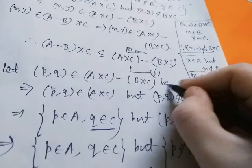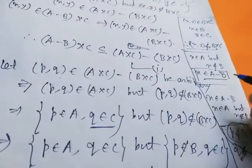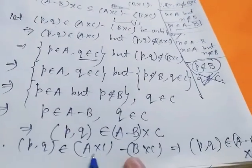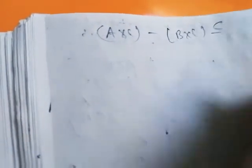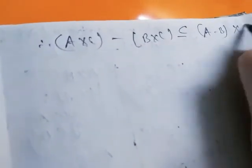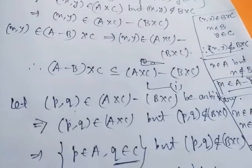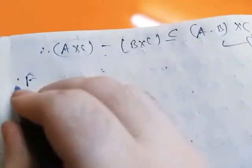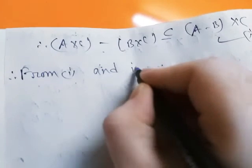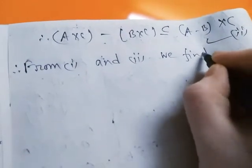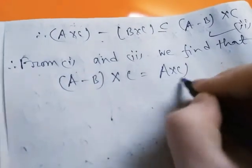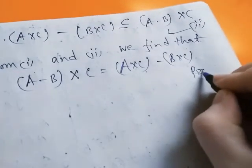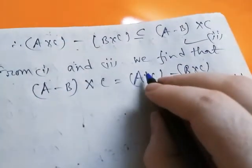This holds for any arbitrary ordered pair (p, q). Hence (A cross C) minus (B cross C) is a subset of (A minus B) cross C — we name this result 2. From results 1 and 2, we find that (A minus B) cross C equals (A cross C) minus (B cross C). So this is proved. If you like this video, please share, subscribe, and comment.